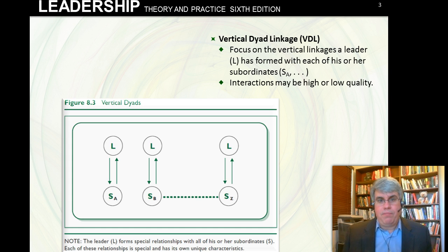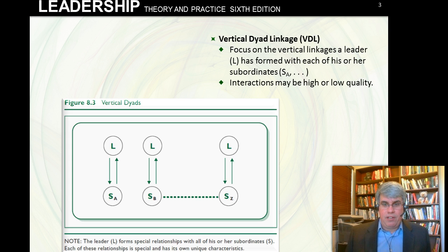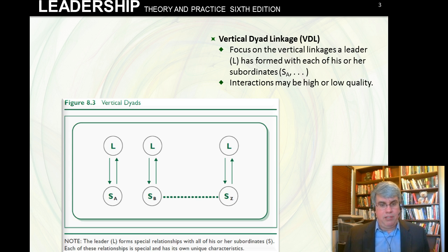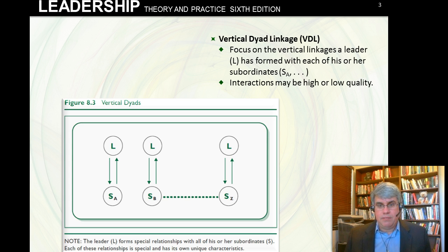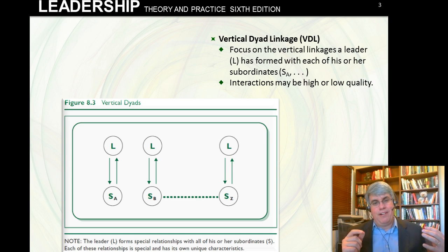In its simplest form, LMX looks at what they call vertical dyads and the linkage between vertical dyads. In the diagram, L is the leader — there's only one leader, the same person — but as the leader goes from subordinate to subordinate, subordinate A, subordinate B, all the way to however many subordinates there are, there are exchanges. There are interactions between the first subordinate and the second, and between each subordinate there's a set of interactions that define the relationship, or the vertical dyad linkage. These interactions may be high quality or low quality, good or bad, or perhaps suboptimal.